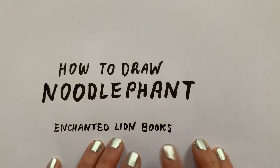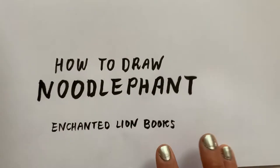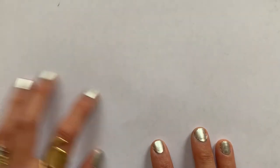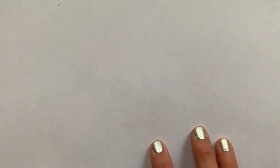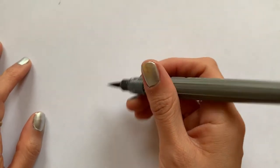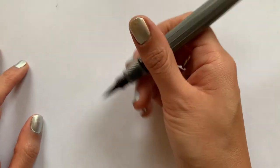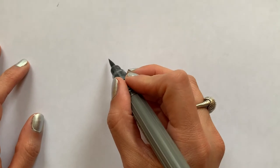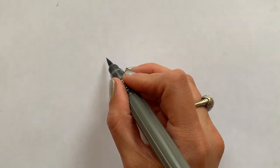How to draw Noodle Fint. I'm very excited about showing you how I draw this character. With Noodle Fint and pretty much all of the other characters in the book, the first thing that I start with is the eye because the eye tells me which direction the character is looking.